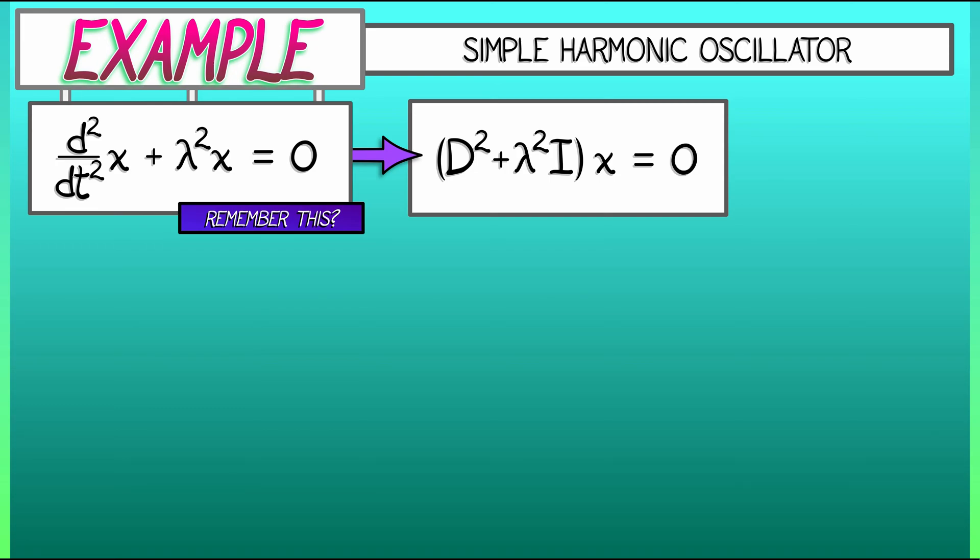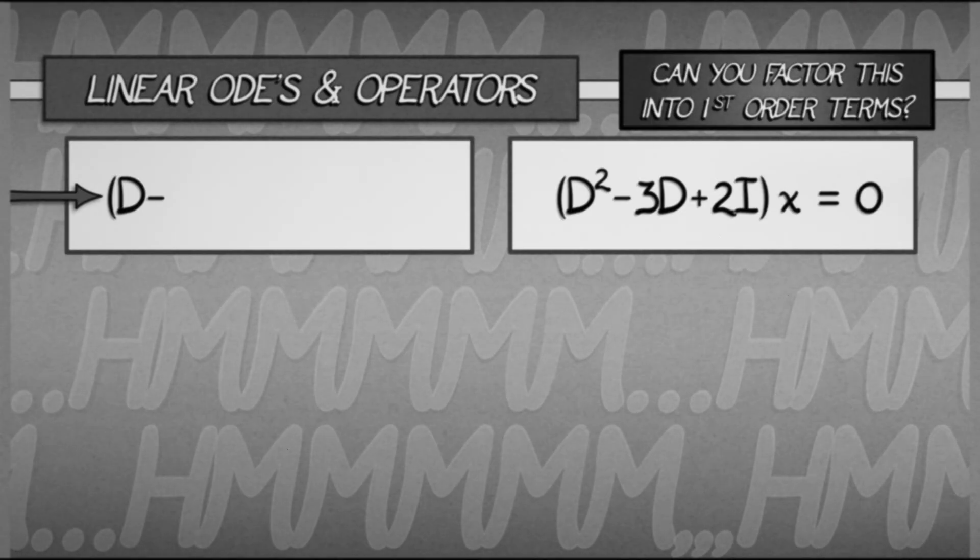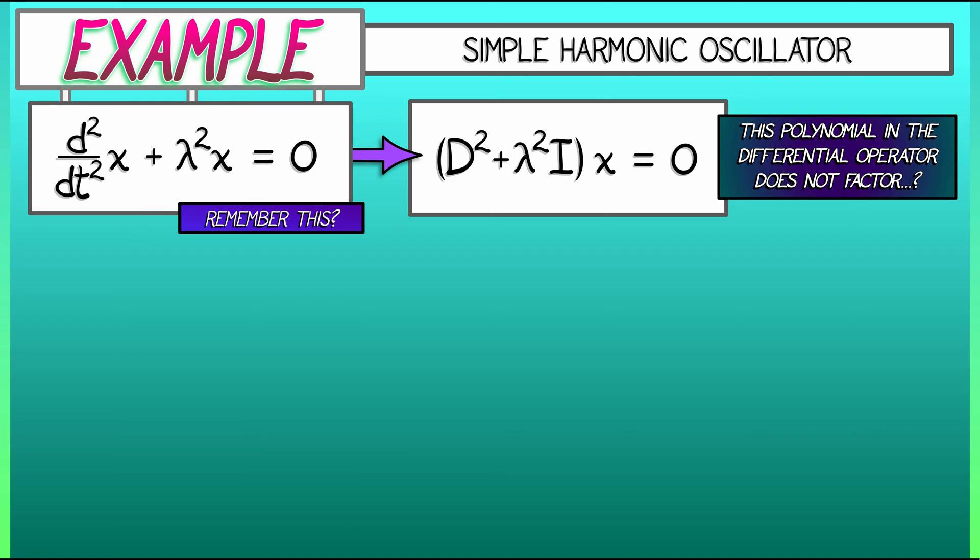Great. Now, what do we do? We want to factor this, but as a polynomial in d, this doesn't factor nicely. This is not like the example that we looked at previously, where we could factor out that differential operator as d minus i times d minus 2i. That doesn't work here. Or does it?